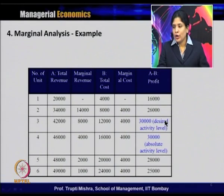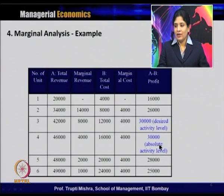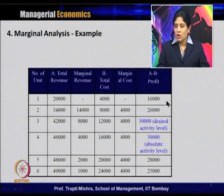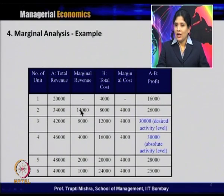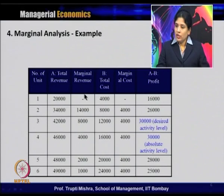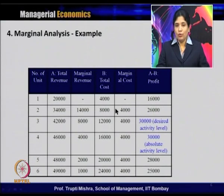For any producer, what should be the desired activity level versus the absolute activity level? Marginal cost remains constant while marginal revenue keeps decreasing from 14,000 down to 1,000. Profit is 16,000 at unit one, 26,000 at unit two, 30,000 at unit three, and 30,000 at unit four. Between the third and fourth unit, one is the desired activity level and the other is the absolute activity level.